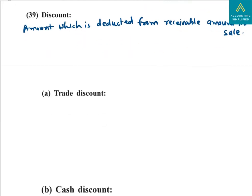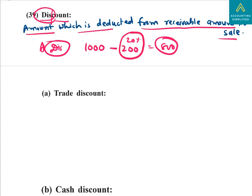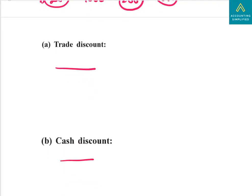Next is discount. Discount is the amount deducted from the receivable amount for a sale. You've heard this term everywhere — on Amazon, Flipkart, or in the market. For example, if the original value is Rs. 1,000 and Rs. 200 is deducted, that is a 20% discount, so you pay Rs. 800. The Rs. 200 deducted is the discount. Discount is of two types: trade discount and cash discount.